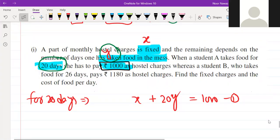Okay, we have part of monthly charges. We will take anything for a month - food charges - and we will take anything for 20 days. So only food charges will be in 20 days.